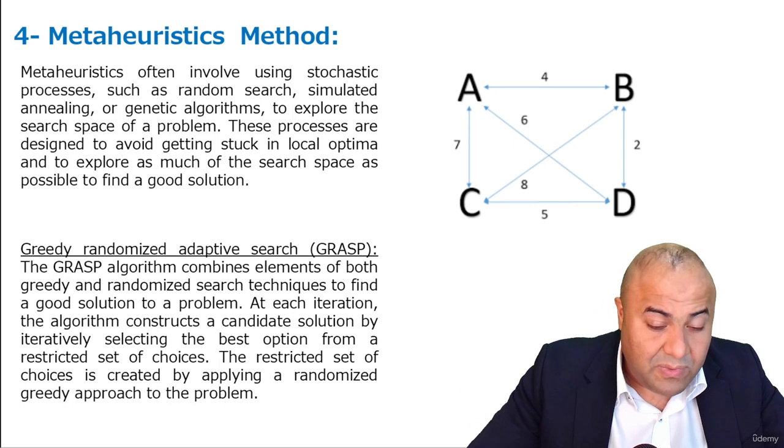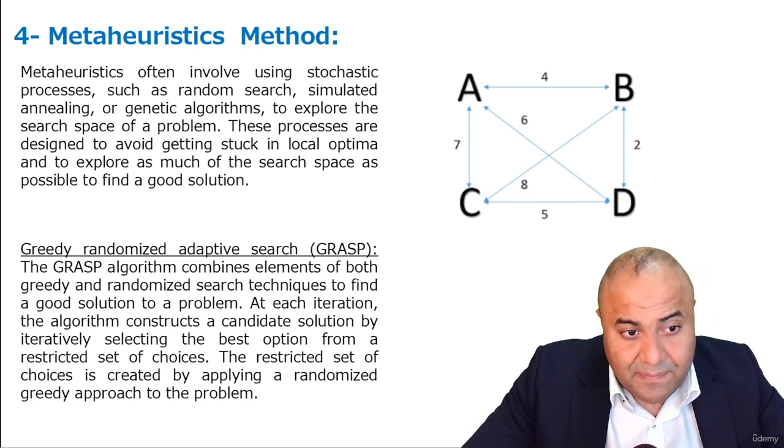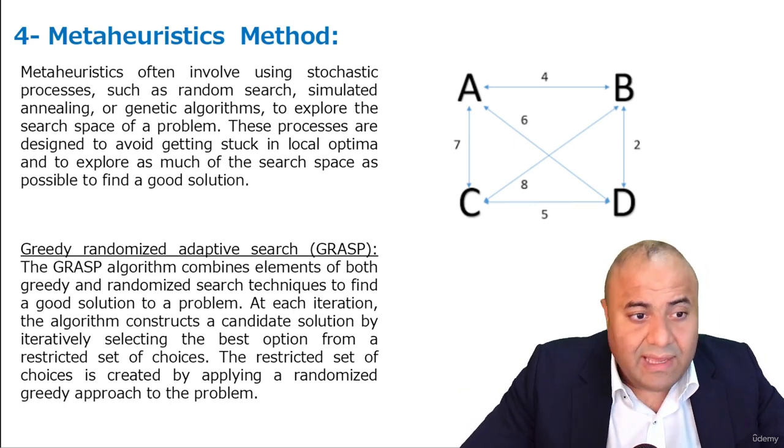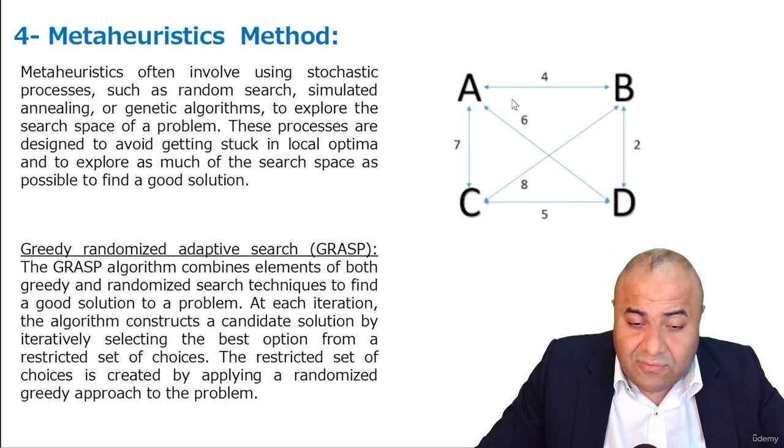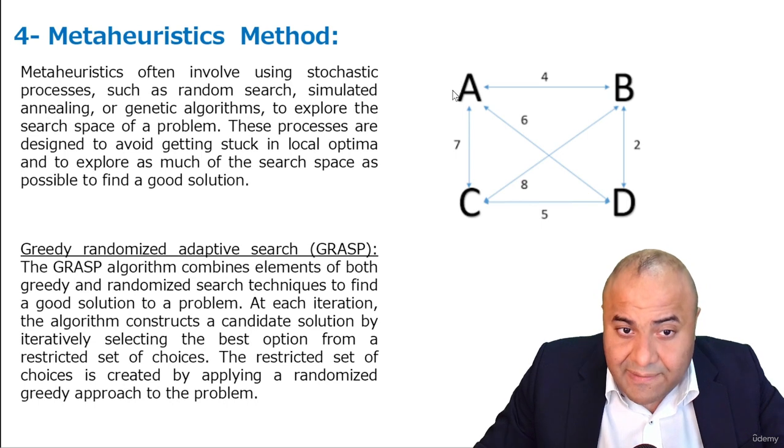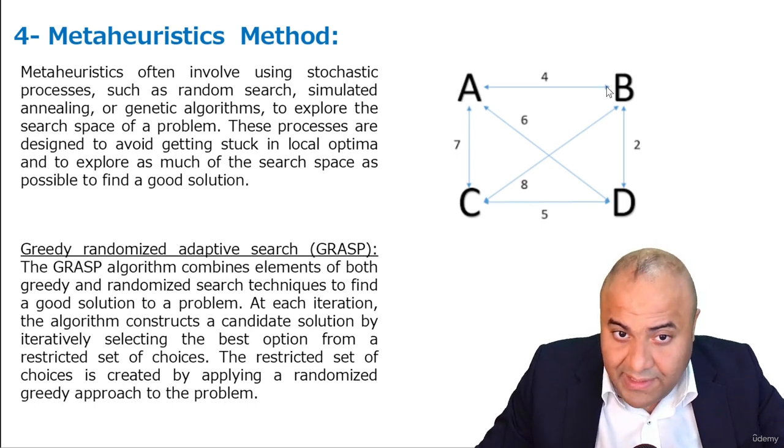In this method, we will code it by ourselves, in which we will code the greedy randomized adaptive search procedure. For example, if you start from point A and you start greedy, you will go for B.